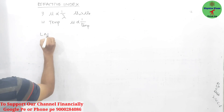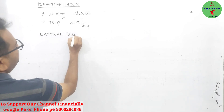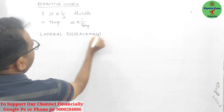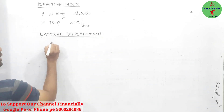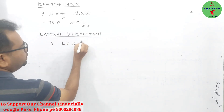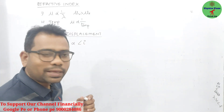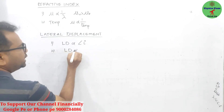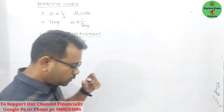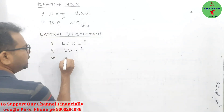Next is lateral displacement. The first factor is angle of incidence — lateral displacement is directly proportional to the angle of incidence. Second one is thickness of the glass slab. Third one is the refractive index of the material with which the glass slab is made — lateral displacement is directly proportional to the refractive index.